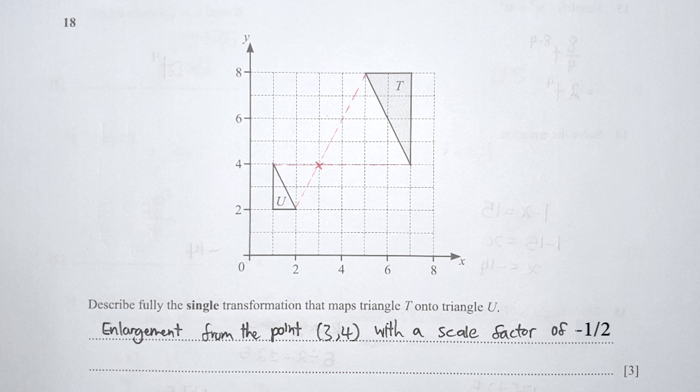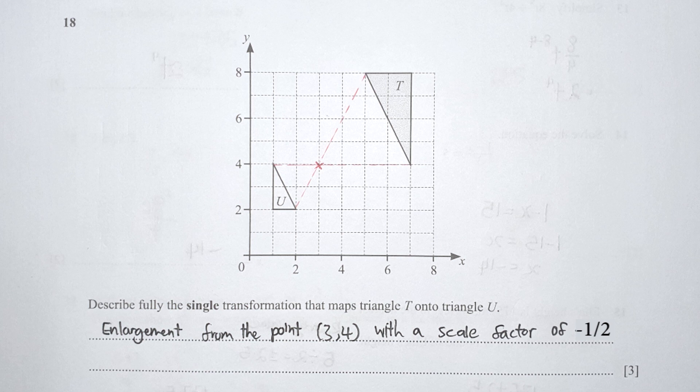Question 18: single transformation that maps triangle T onto U. It is an enlargement from point (3, 4), identified by joining the sides to find their intersection. The shape was inverted, so remember to put a negative scale factor, and it was also shrunk, so it is negative one over two. If you wrote negative 2, you treated the transformation as U onto T rather than T onto U.